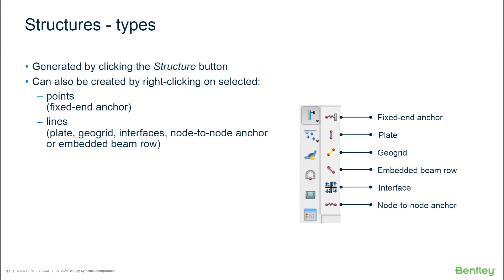Even though we will discuss them in more detail later on today, the structures available in Plaxis are the fixed-end anchor, the plate, the geogrid, the embedded beam row, the interface, and the node-to-node anchor. There is a dedicated option for selecting the different structures. You can find them based on the relevant object they're assigned — for instance, a fixed-end anchor will also be in the points option, and the plate, geogrid, interface, node-to-node anchor, and embedded beam will also be in the create line option.